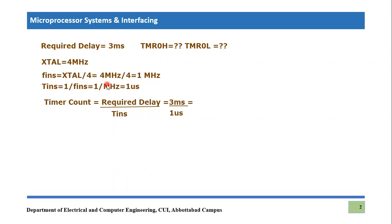Then we calculate the time of one instruction, or instruction time. Instruction time equals the reciprocal of instruction frequency: 1 over frequency. So 1 over 1 MHz equals 1 microsecond. Now, the total count that the timer must repeat is calculated using: required delay divided by time of one instruction.